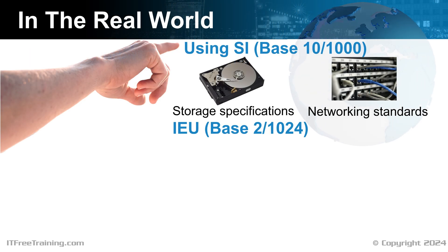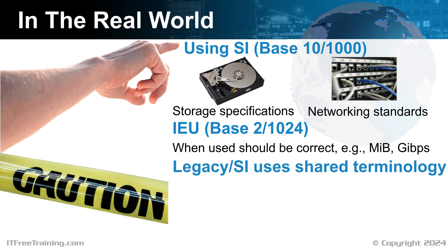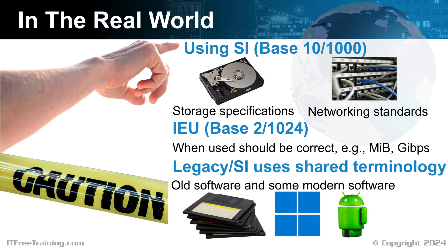In the real world, SI units are always used for storage specifications and networking standards. The SI units are worked out on base 10, which essentially means everything is a multiple of 1,000. Previously, I have seen storage with both the SI value and the IEC value on the back of the product box. This does not seem to occur anymore. Nowadays, manufacturers seem to only put the SI value on the box, which would make sense as that gives the larger value. For IEC units, this uses base 2 and thus uses a multiplier of 1,024. When you see the IEC standard used, for example MiB, you will see an i in the abbreviations or the name.